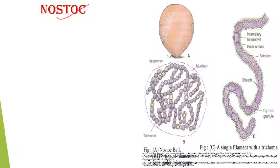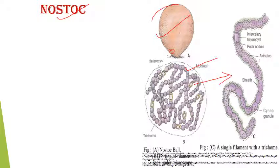We can see in this image also — this is the colonial form. It's a solid, jelly-like structure formed by Nostoc filaments. If we see a small filament of Nostoc, we see a ball-like structure. There are many filaments covered by a common sheath. A single filament consists of vegetative cells, heterocysts, and some thick-walled cells which lie in chains, known as akinetes.